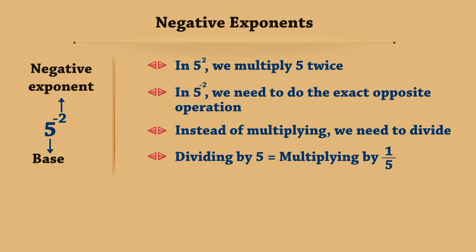Dividing by 5 is equal to multiplying by 1 upon 5. Therefore, 5 raised to negative 2 is equal to 1 upon 5 into 1 upon 5, which is equal to 1 upon 25, which is equal to 1 upon 5 raised to 2.